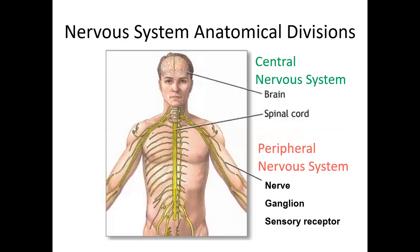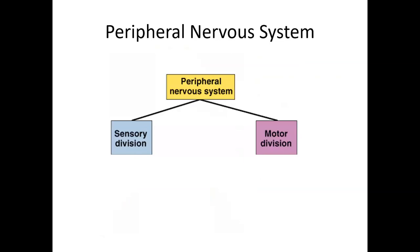I want to go back to some basics we've learned about: the central nervous system versus the peripheral nervous system. If it's brain or spinal cord, it's central nervous system. And if it's a nerve, a ganglion, or a sensory receptor, it's peripheral nervous system.